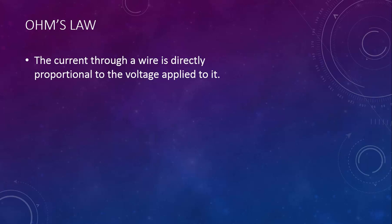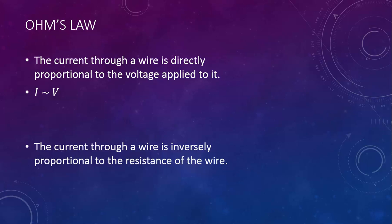The current through a wire is directly proportional to the voltage applied to it. The current through a wire is inversely proportional to the resistance of the wire. When we put these together to form an equation, we find that I equals V divided by R. If we cross multiply, we get V equals I times R.